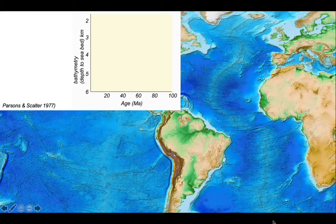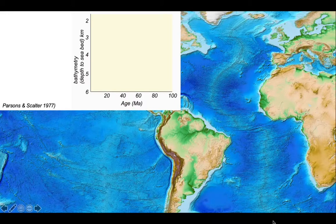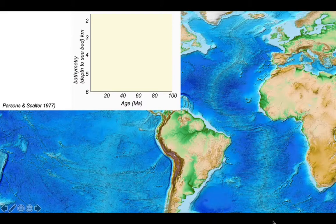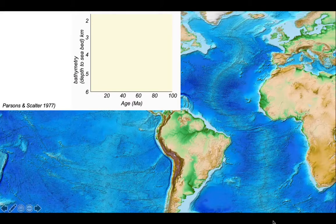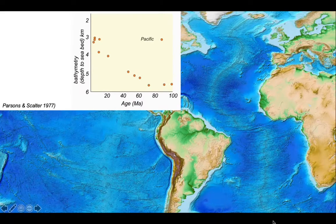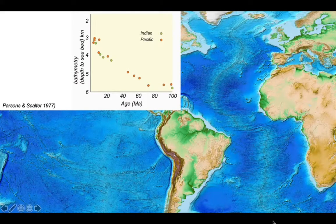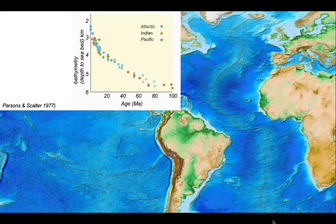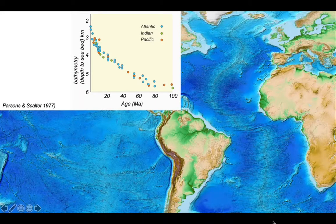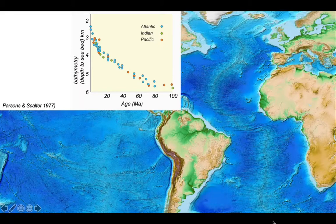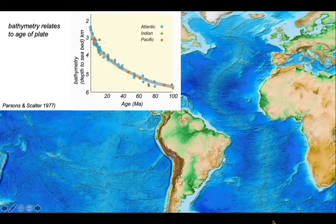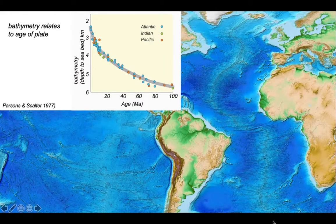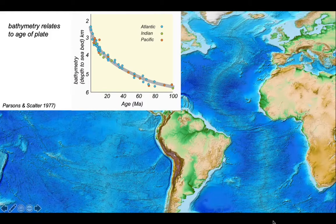By the middle to late 1970s, there was enough data around to begin to compile the age of the ocean crust and to compare that with the water depth at which it was found, its bathymetry. Let's see how the data plotted. Here's the data for the Pacific, and the Indian Ocean, and finally the Atlantic. All these data sit rather nicely on a single curve. This illustrates that bathymetry relates to the age of the plate, or at least the oceanic crust.